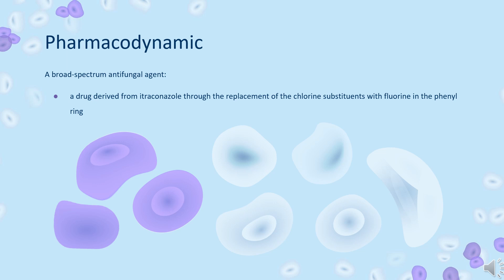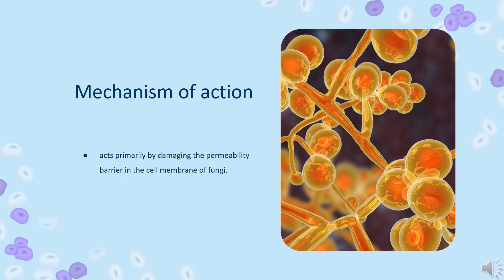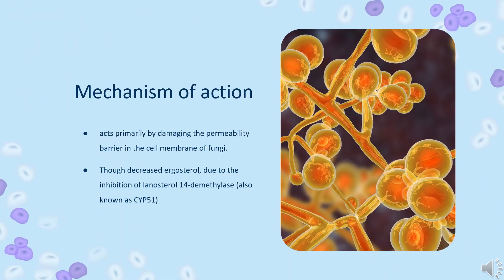Posaconazole can be either fungicidal or fungistatic in action. As a triazole antifungal agent, posaconazole exerts its antifungal activity through blockage of the cytochrome P450-dependent enzyme sterol-14-alpha-demethylase in fungi by binding to the heme cofactor located on the enzyme. This leads to the inhibition of the synthesis of ergosterol, a key component of the fungal cell membrane, and accumulation of methylated sterol precursors, resulting in inhibition of fungal cell growth and ultimately cell death.